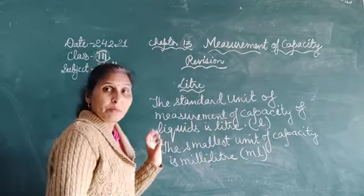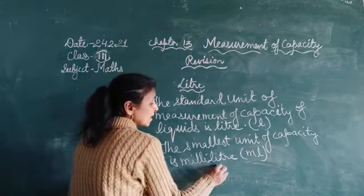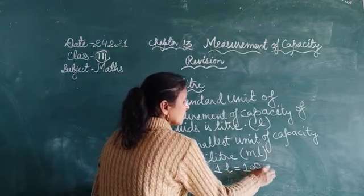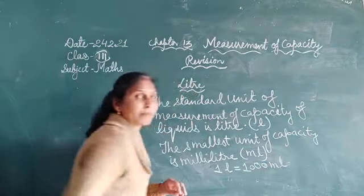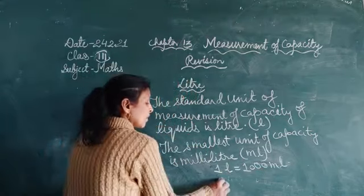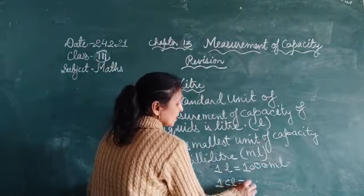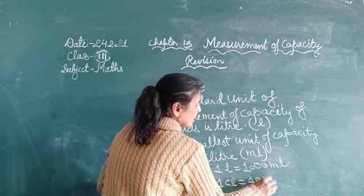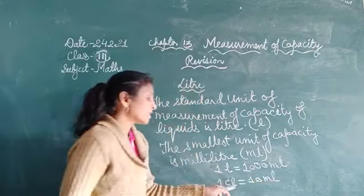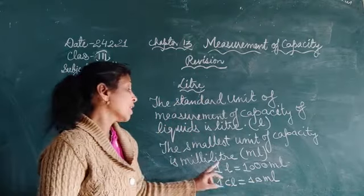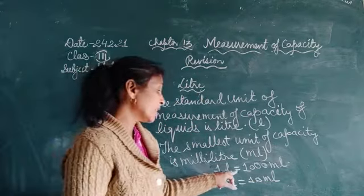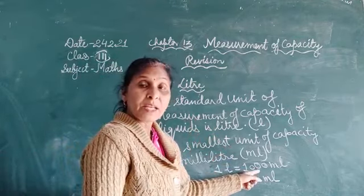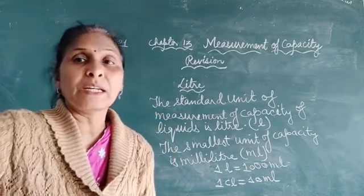Now there is some important relation. One litre is equal to one thousand millilitres. And one centilitre is equal to ten millilitres. CL means centilitre — you should remember this. So in one litre, there are one thousand millilitres.